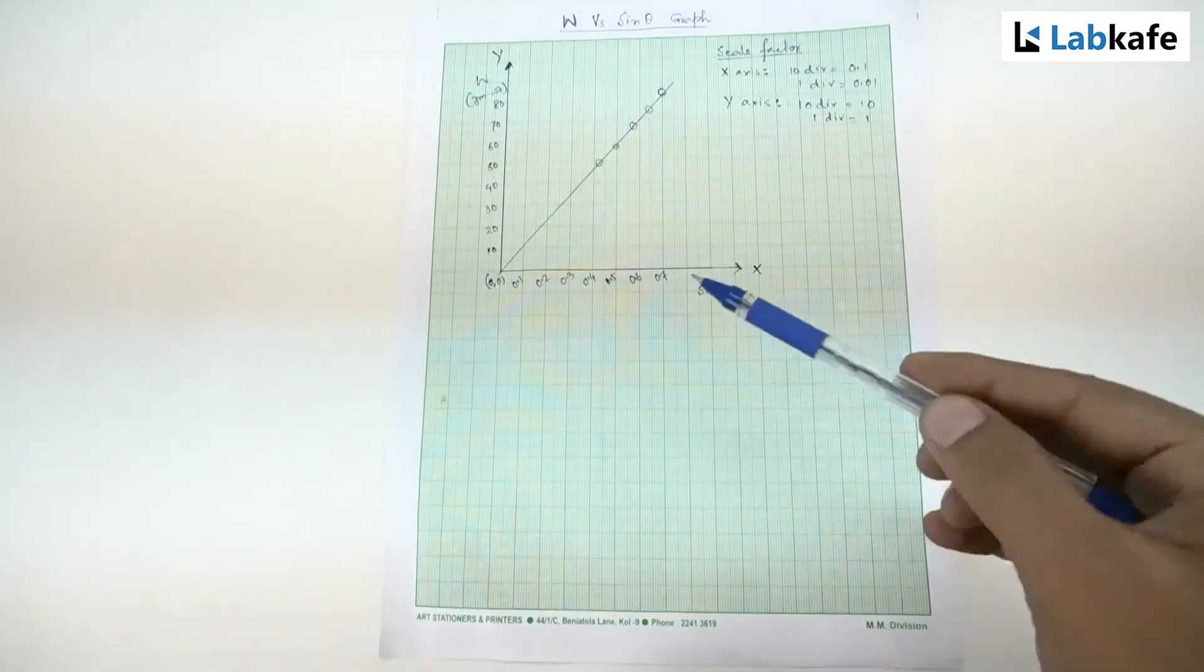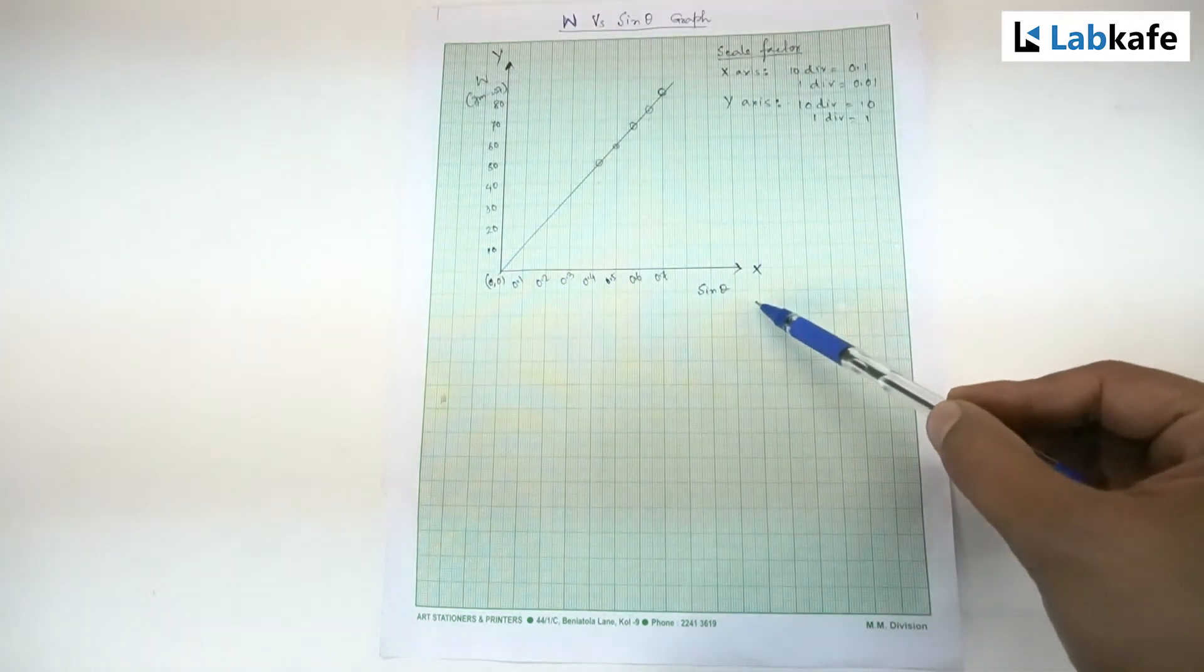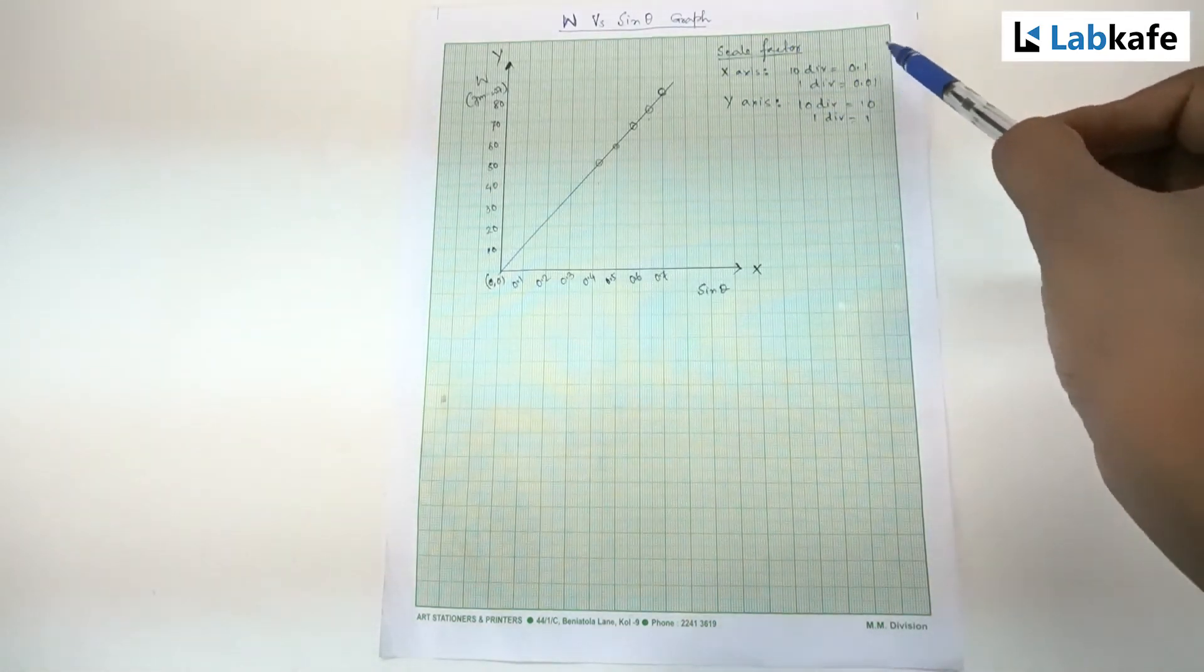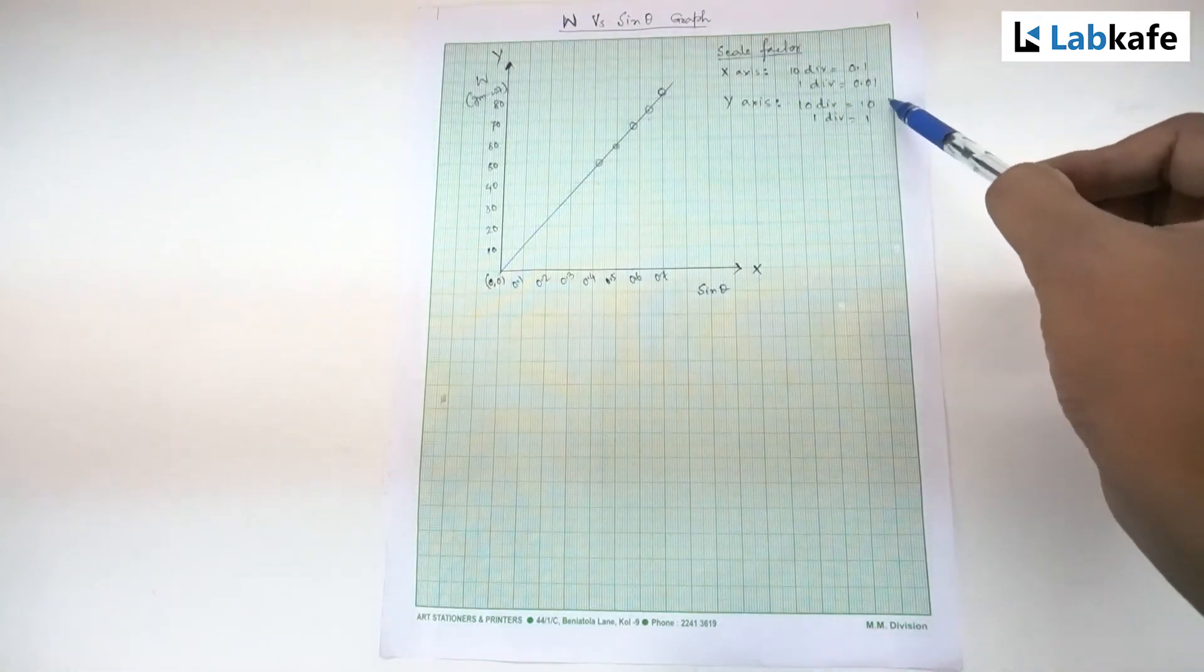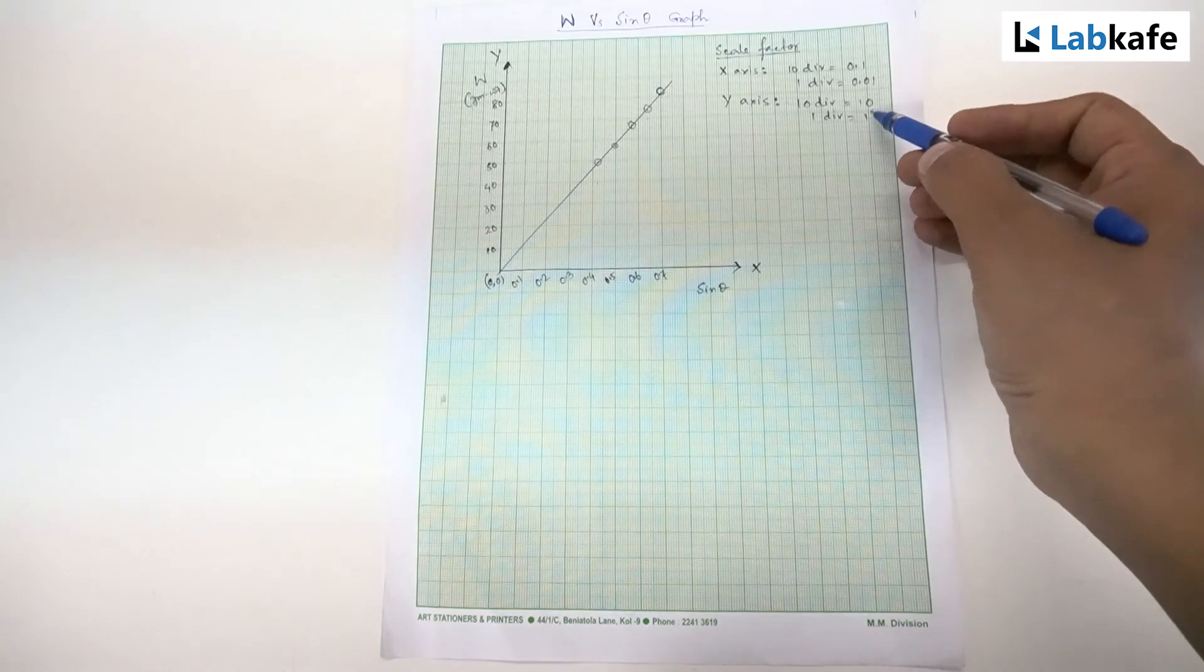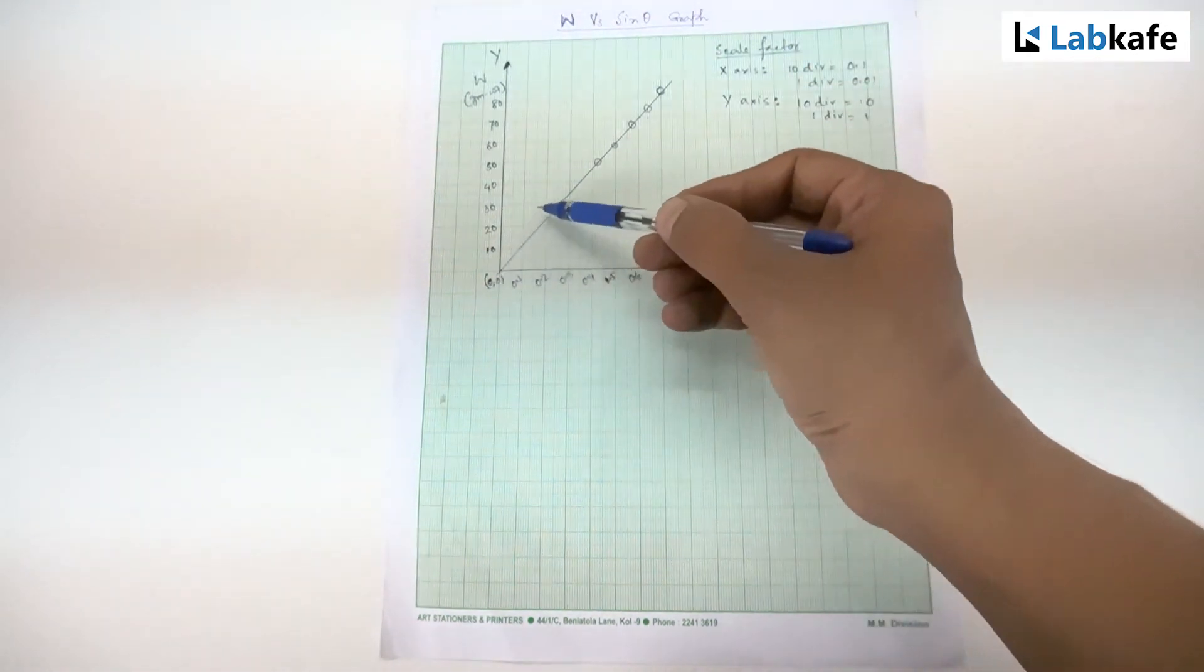After taking the readings, I have plotted w on the y-axis and sine theta on the x-axis. The scale factor for the graph: on the x-axis, 10 divisions equals 0.1, so 1 division equals 0.01. On the y-axis, 10 divisions equals 10, 1 division equals 1. The graph looks like it's a straight line passing through the origin.